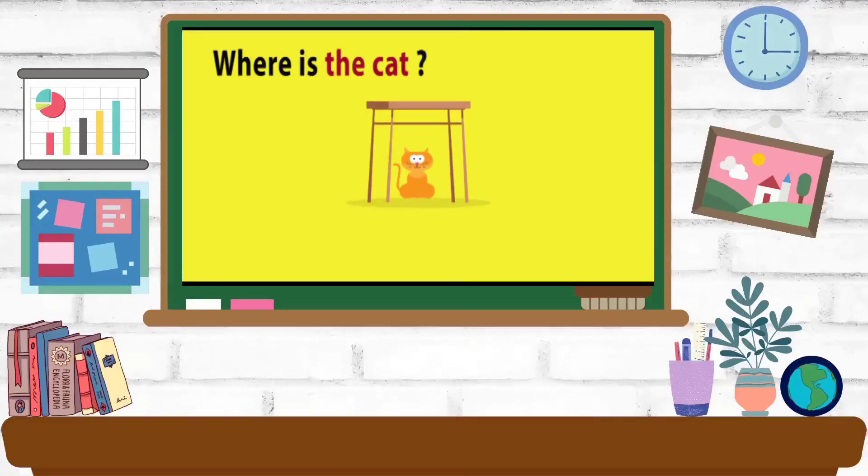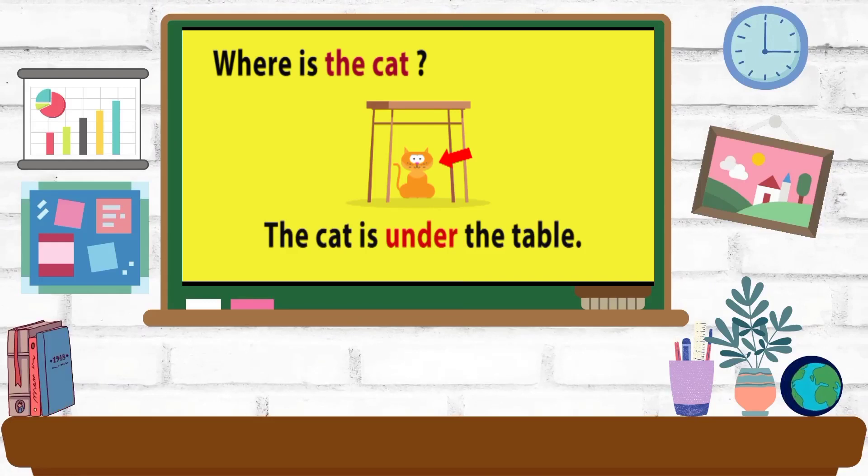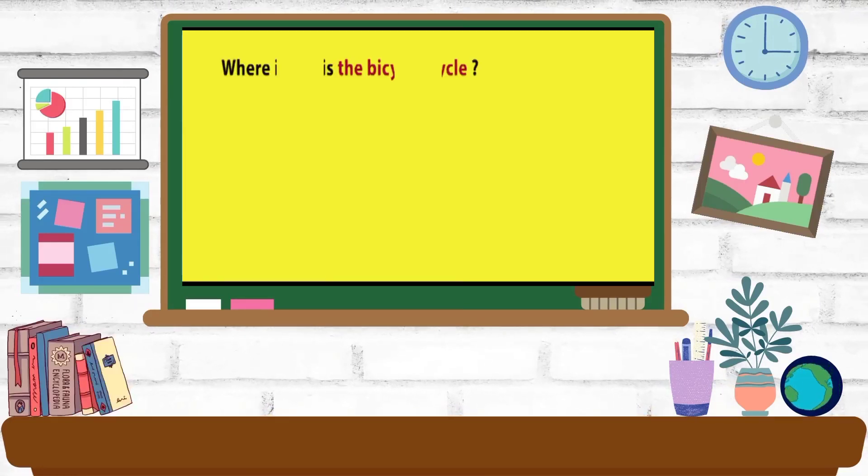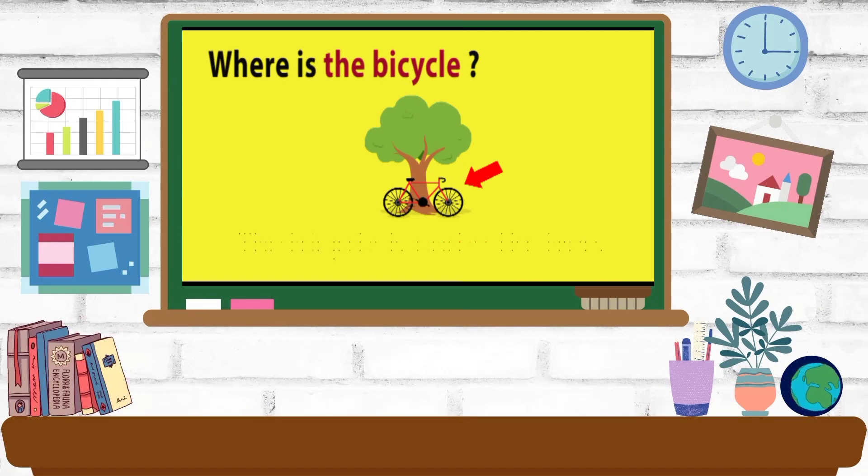Where is the cat? The cat is under the table. Where is the bicycle? The bicycle is under the tree.